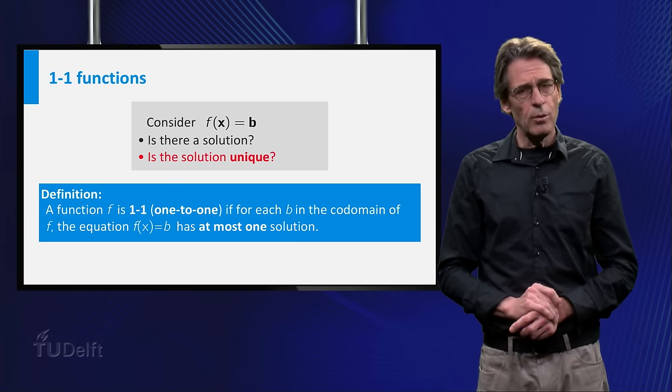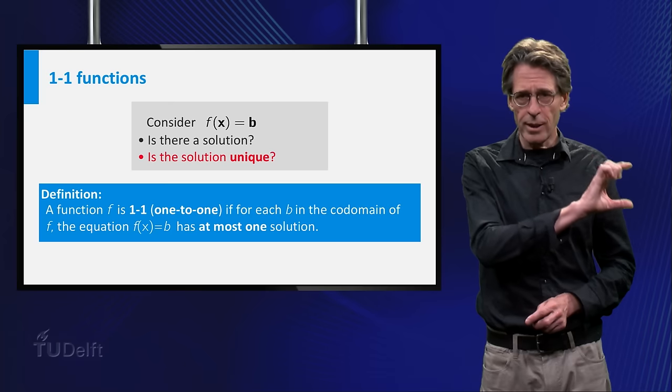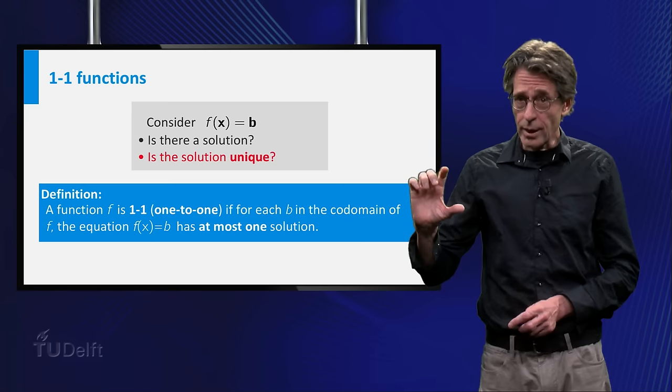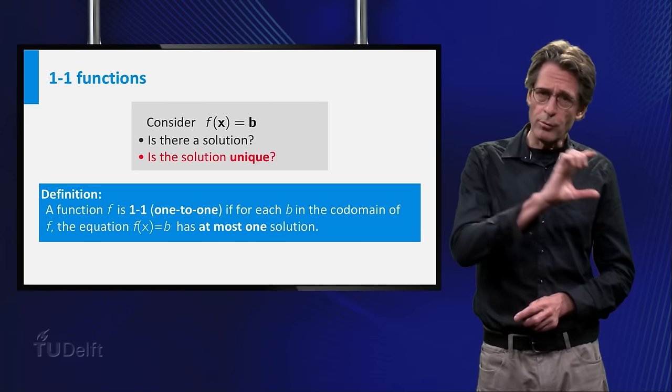Another way to say the same: for each b in the codomain, there is at most one a in the domain for which f of a equals b.